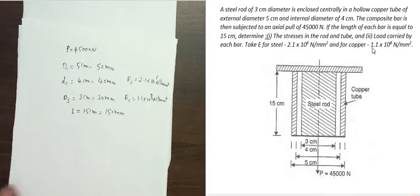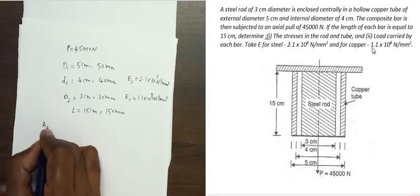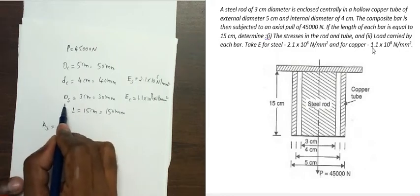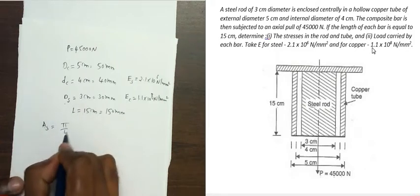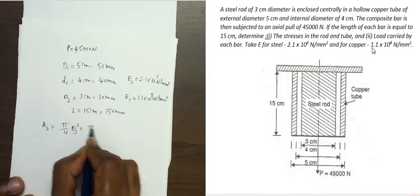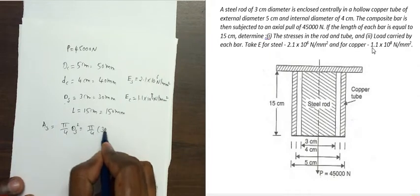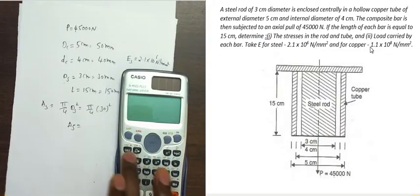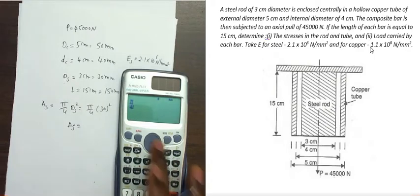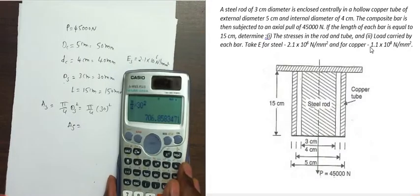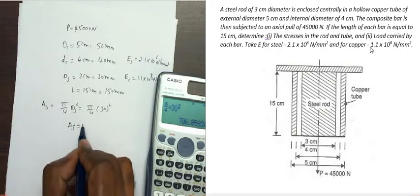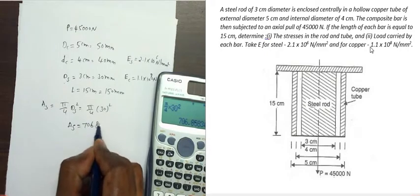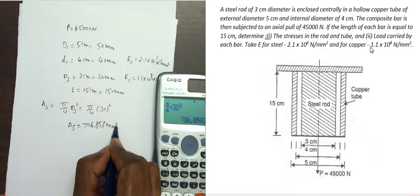First we find the area of the copper tube and the area of the steel rod. The area of steel AS is equal to π/4 × DS². That is π/4 × 30², which equals 706.858 mm². This is the area of steel.